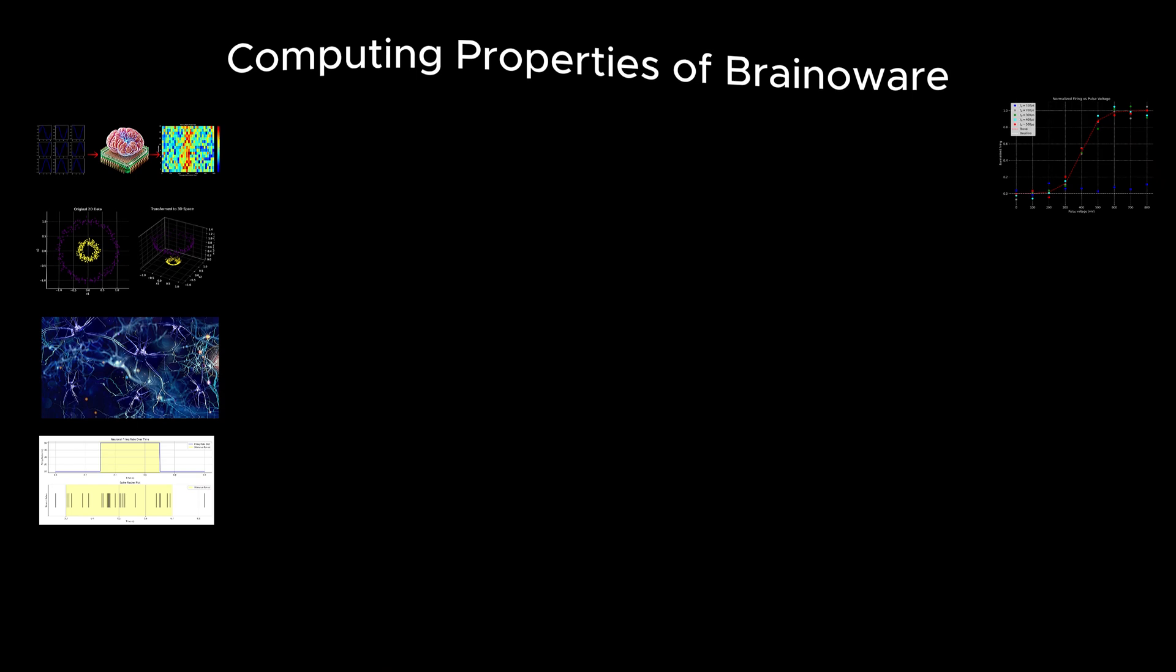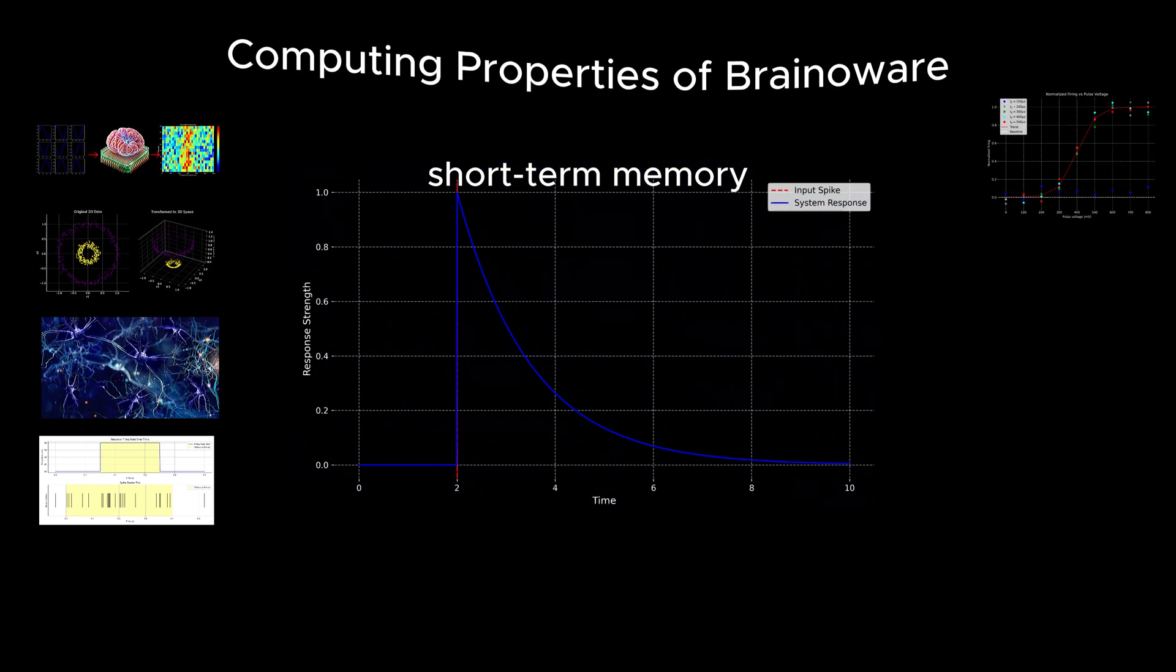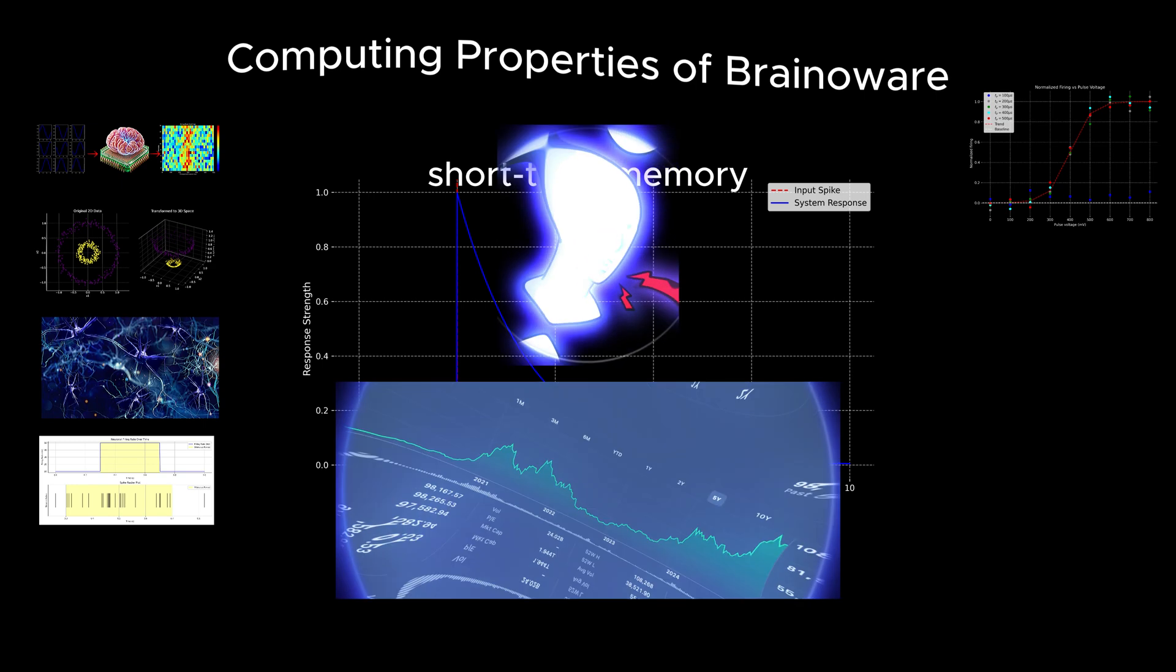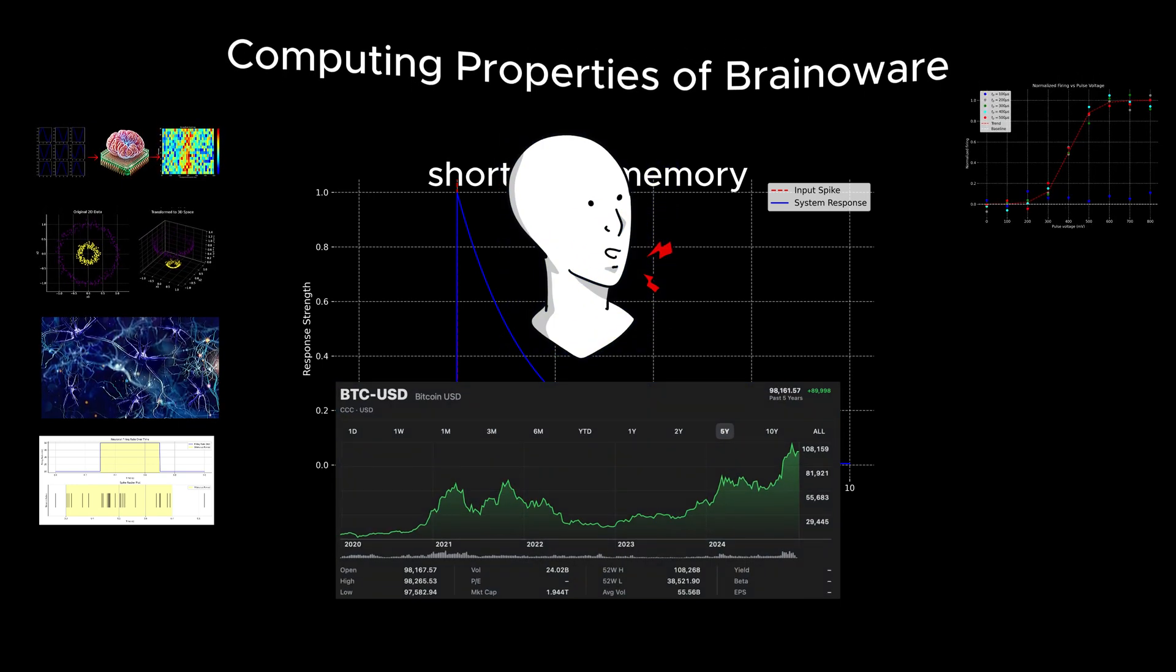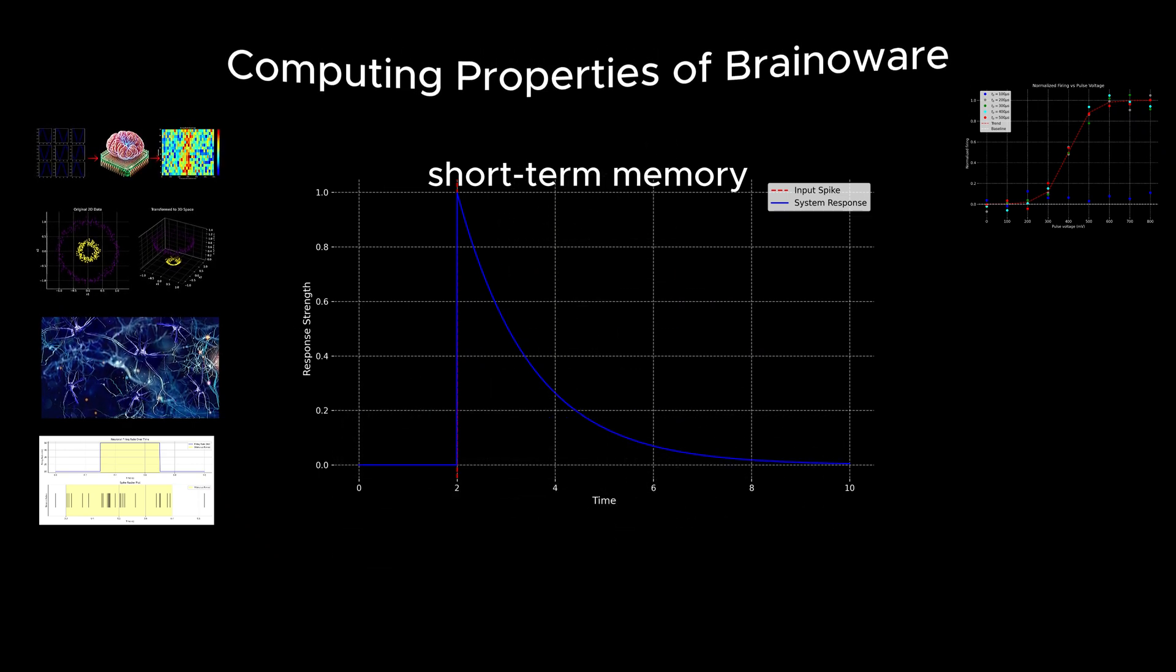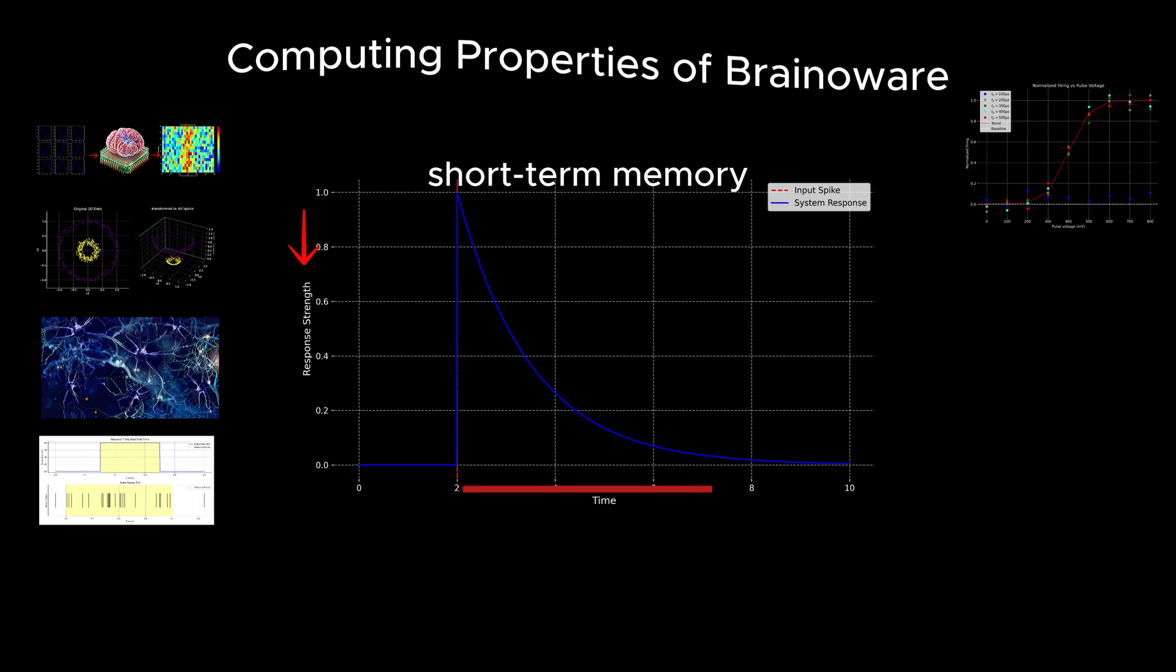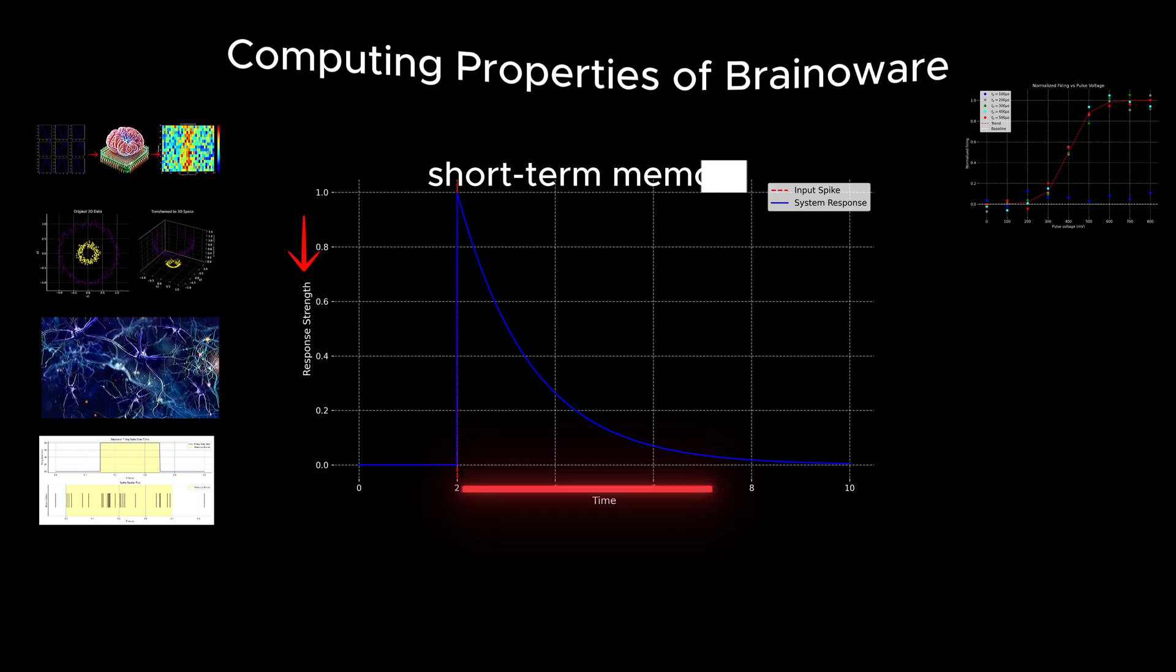Another key aspect that a computing system needs to have is short or fading memory. Fading memory is a critical property in computing systems, especially for tasks involving sequential or time-dependent data, such as speech recognition and time series prediction, for example, for stock market. It allows the system to retain information from past inputs for a limited time, ensuring that recent inputs have a stronger influence on the computation but the older ones still contribute to some degree.